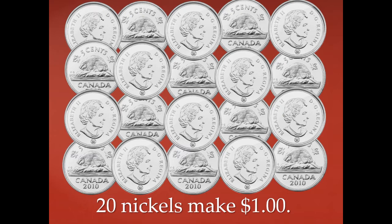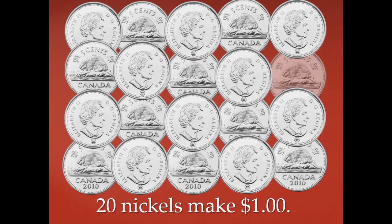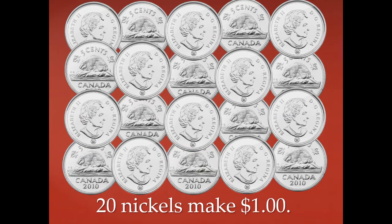There are twenty nickels in one dollar. We're going to count these nickels by five and see if we can get to one dollar, or one hundred cents. Will you count with me? Let's begin: five, ten, fifteen, twenty, twenty-five, thirty, thirty-five, forty, forty-five, fifty, fifty-five, sixty, sixty-five, seventy, seventy-five, eighty, eighty-five, ninety, ninety-five, one hundred! One hundred cents equals a dollar, so we need twenty nickels to make one dollar.